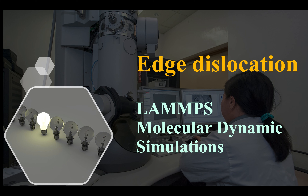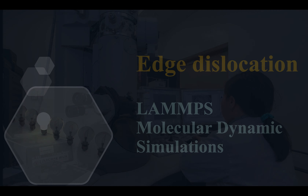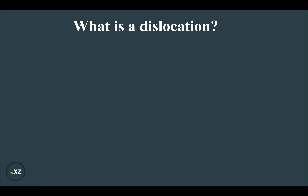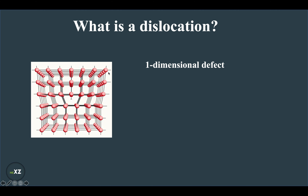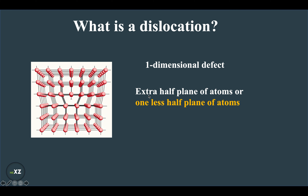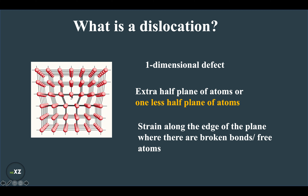Today I want to discuss how to create an edge dislocation using molecular dynamic simulations. A dislocation is a one-dimensional defect. In this schematic, the spherical balls represent atoms bonded together in a crystal lattice. There is an extra half plane of atoms, and the strain is along the edge of that plane — there are broken bonds, creating more energy not compensated by other atoms. That is how strain is created in a lattice, which is called a dislocation.